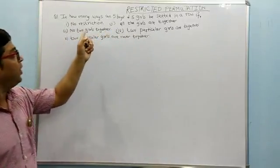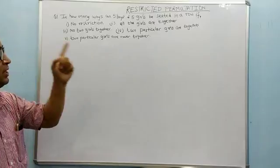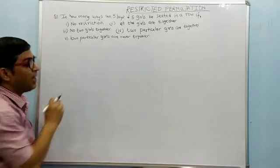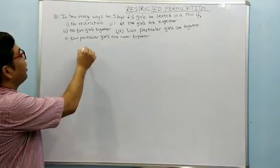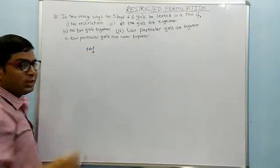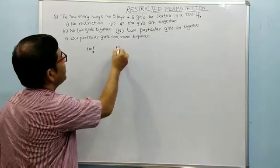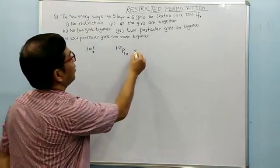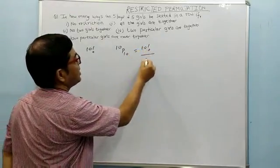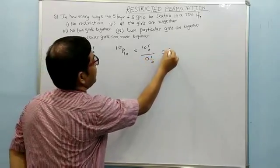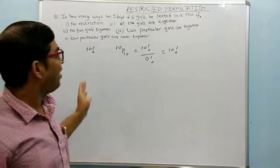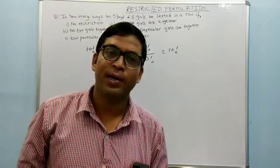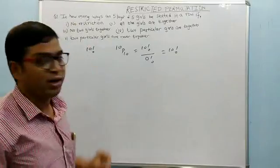In the first question, in how many ways can five boys and five girls be seated in a row if there is no restriction? There are ten students and they can be seated in a row in 10 factorial ways. This is because it is 10P10, which equals 10 factorial divided by 0 factorial, giving us 10 factorial. With no restriction, we simply arrange all ten students in ten seats.